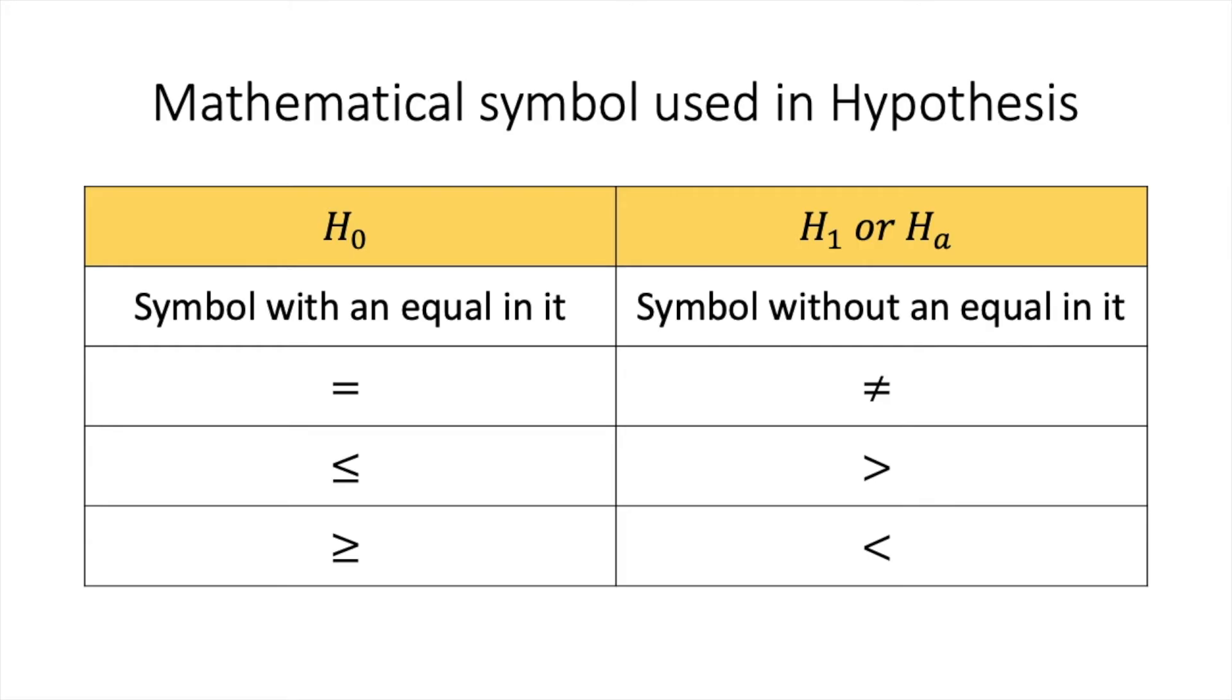Now, you should also be aware of the mathematical symbols used in hypothesis. For the H0, there is always an equal sign. And whereas for your alternative, which is H1, it's without an equal in it. For example, if your H0 is equal, your alternative will be not equal to.